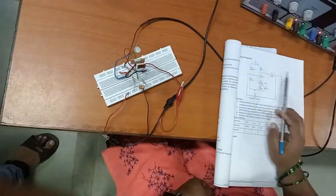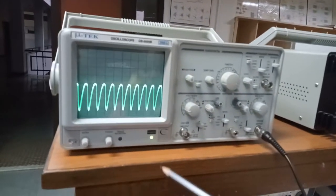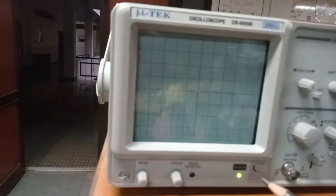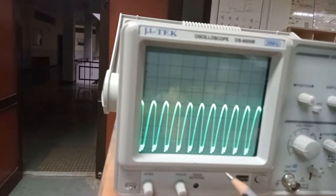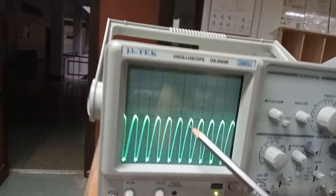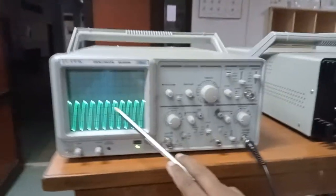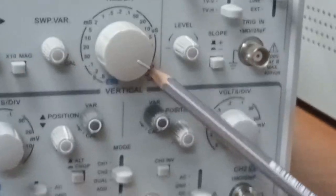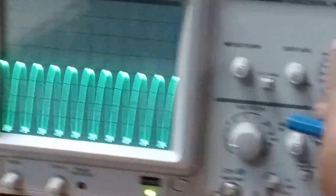After making these connections, you will get a waveform like this. You can see the generated sinusoidal waveform. Now calculate the frequency. Count the number of divisions on X axis. One full cycle takes one unit, with 0.5 time per division on the oscilloscope.